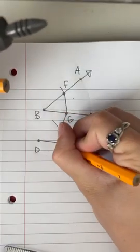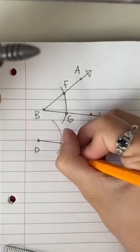And where it intersects the segment DE, you're going to label it H.